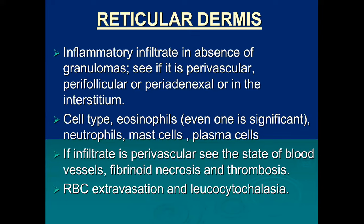Inflammatory infiltrate can be seen in the absence of granulomas. Determine whether the infiltrate is perivascular, periadnexal, or interstitial, and identify the cell types: eosinophils, neutrophils, mast cells, or plasma cells. If the infiltrate is primarily around blood vessels, exclude whether this is a product of neutrophilic vasculitis.